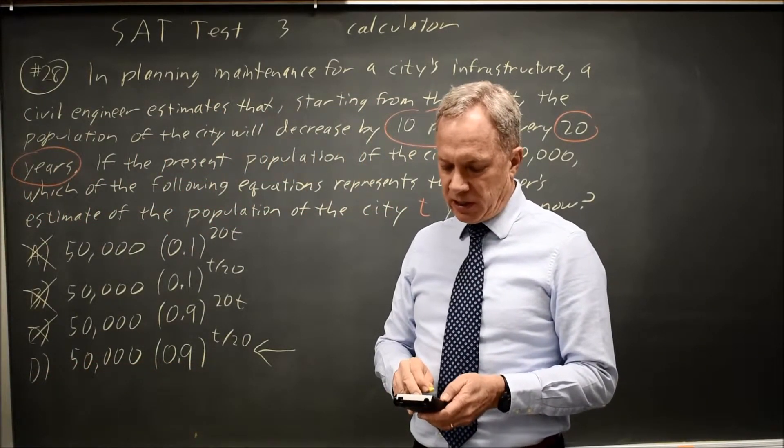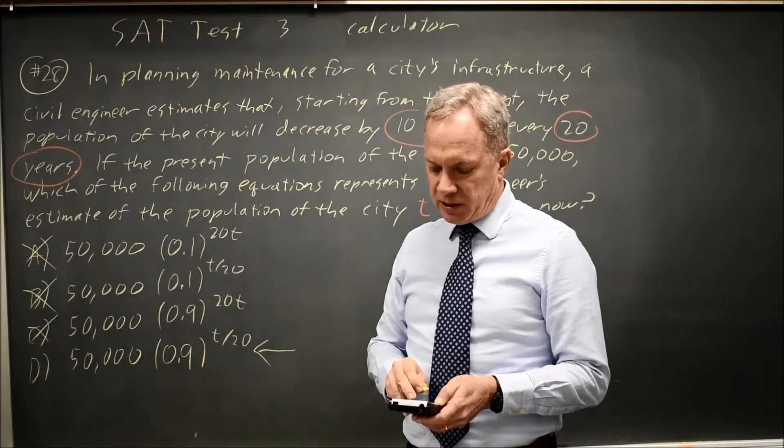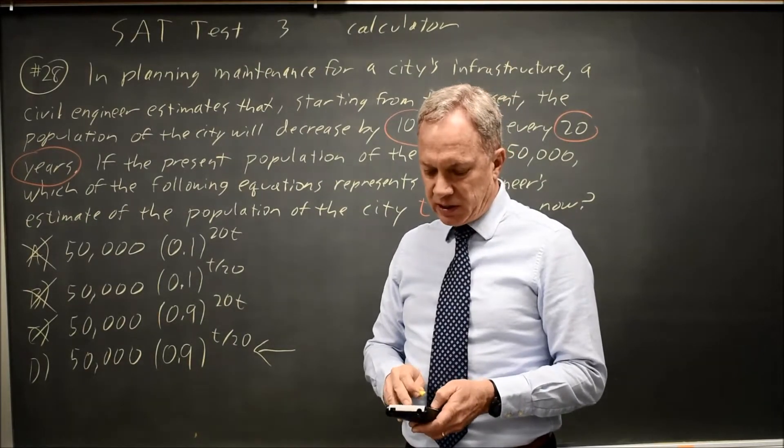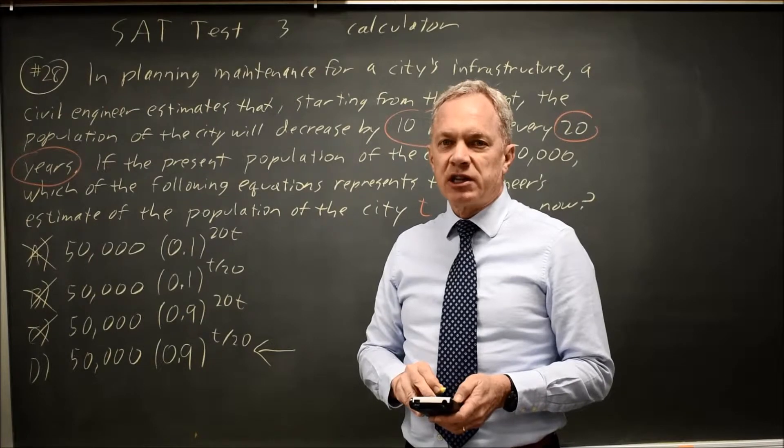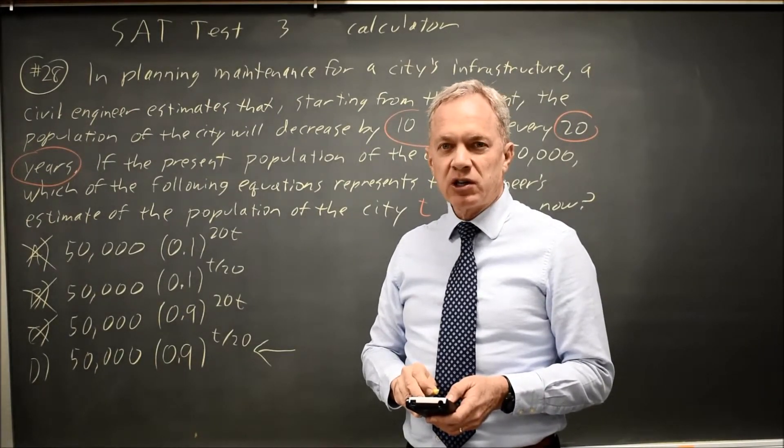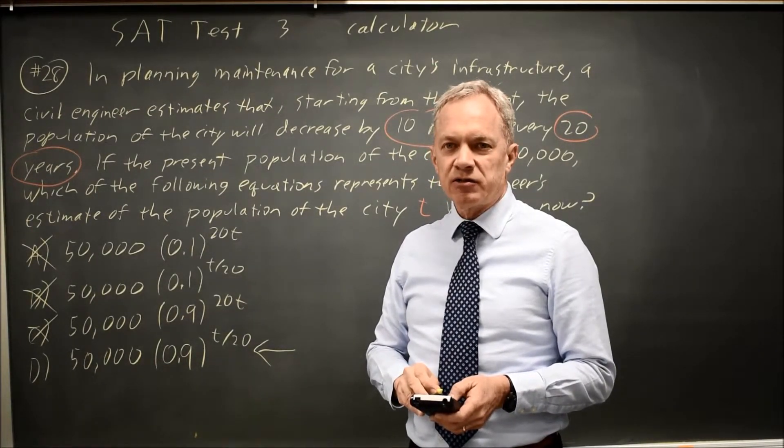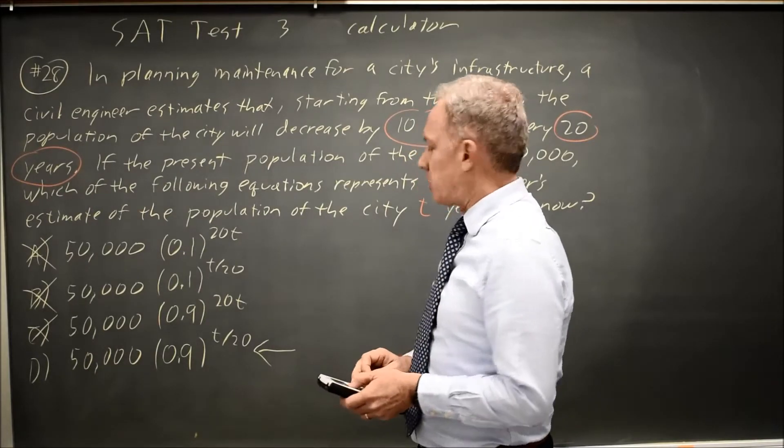And choice D, 0.9 to the t over 20. I start with a population of 50,000. After 20 years, I have 45,000. That is a loss of 10%, which is what I'm supposed to find.